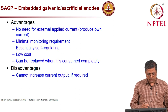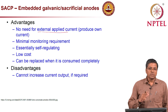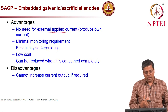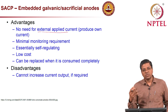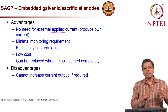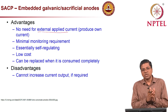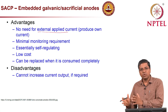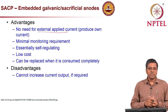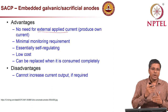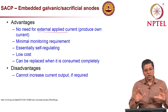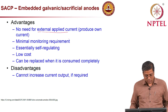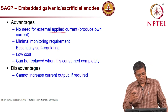Advantages of the sacrificial anode system: no external applied current is needed. The zinc reacts based on demand — during rainy season with high moisture, current supply is higher; during dry summer, the demand is less. The sacrificial anode system self-regulates, supplying current based on what the steel demands, protecting it from further corrosion. With sacrificial anode systems, the life can be extended by about 20–25 years.